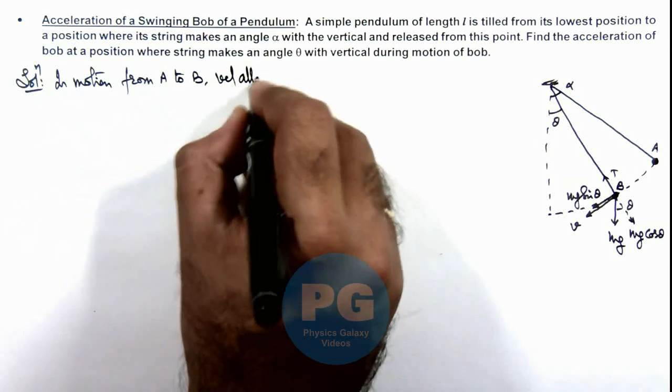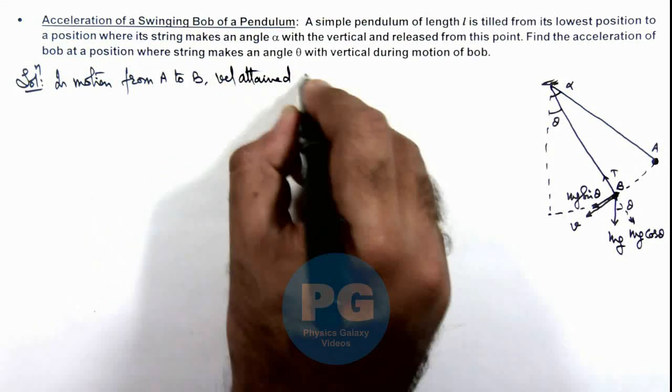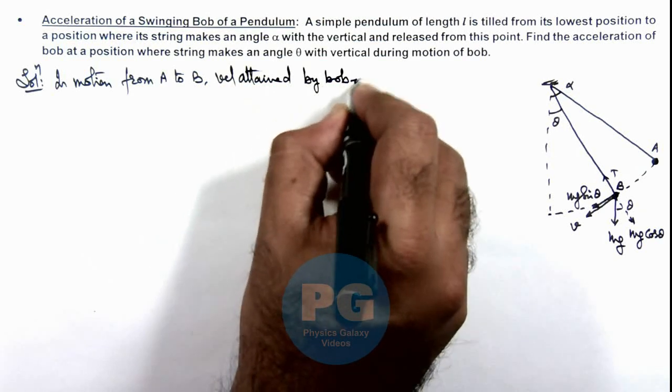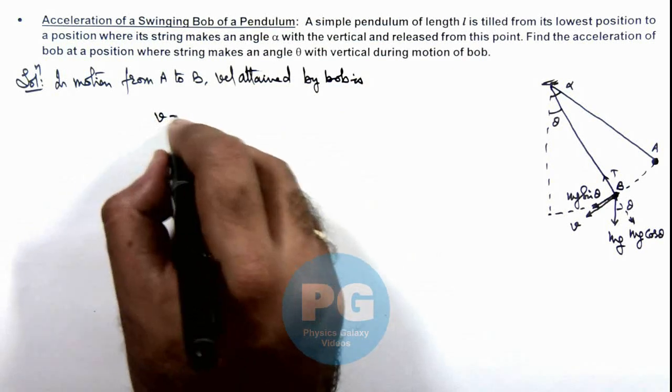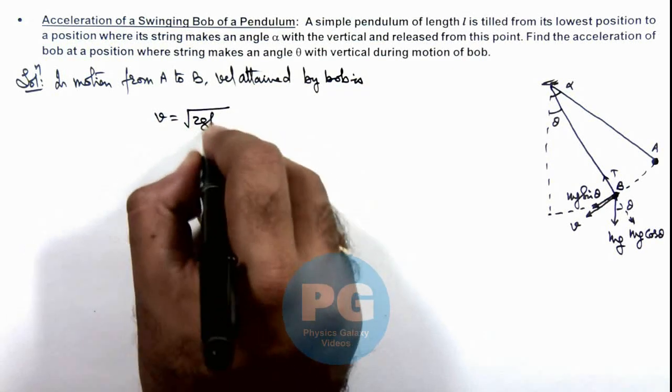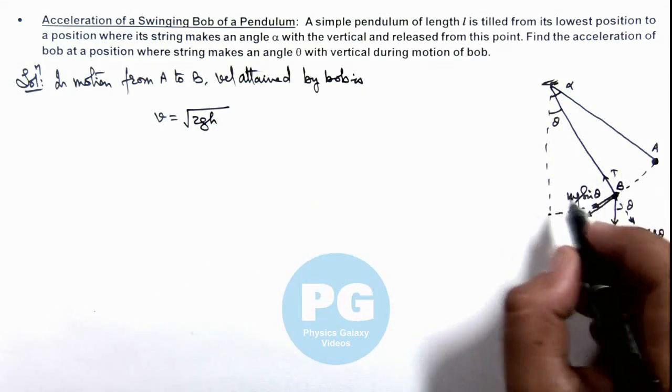Velocity attained by the bob is - this velocity we can simply write as √(2gh) if h is the height fallen by the bob. And in this situation, this height fallen can be easily calculated.